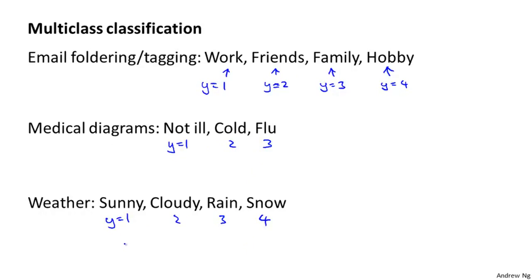And so in all of these examples, y can take on a small number of discrete values, maybe 1 to 3, 1 to 4, and so on. And these are multi-class classification problems. And by the way, it doesn't really matter whether we index this as 0, 1, 2, 3, or as 1, 2, 3, 4. I tend to index my classes starting from 1, rather than starting from 0, but either way works, and it really doesn't matter.